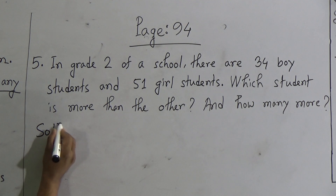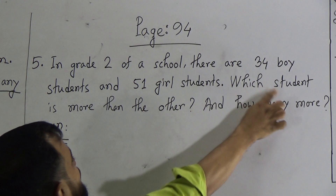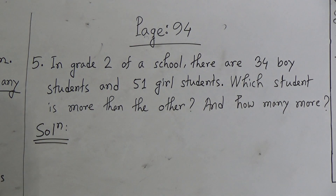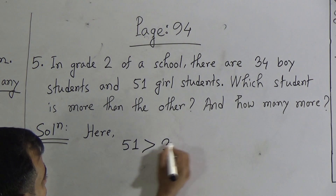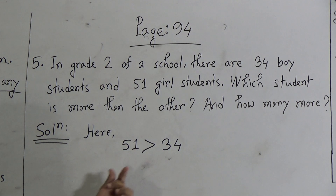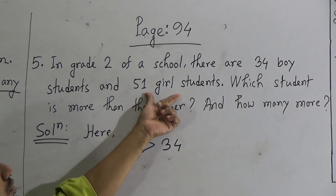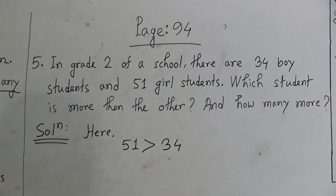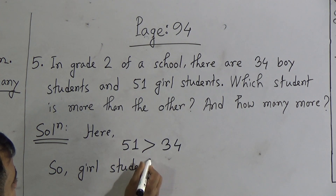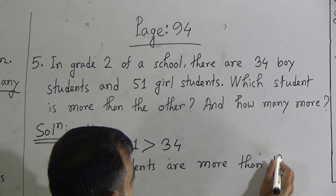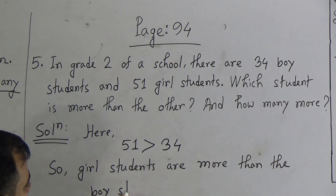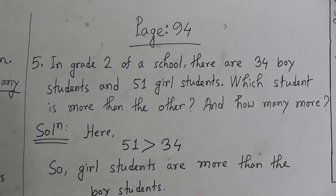Now the solution: we should solve the first part first. The first question is which students are more than the others — this means we need to find out which number is greater: 51 or 34. Here 51 is greater than 34. That is why girl students are more than the boy students. So we write down: girl students are more than the boy students. This is our first task done.